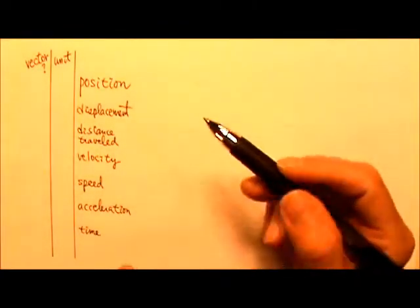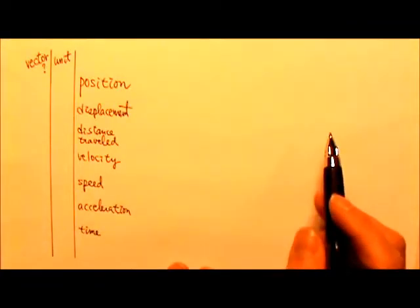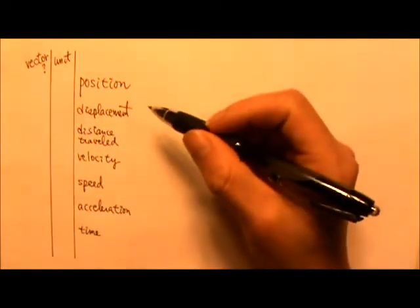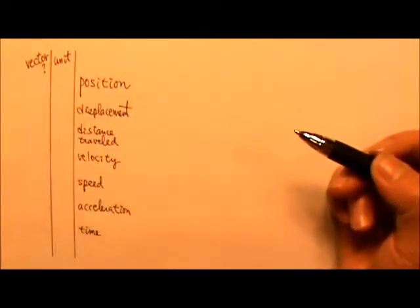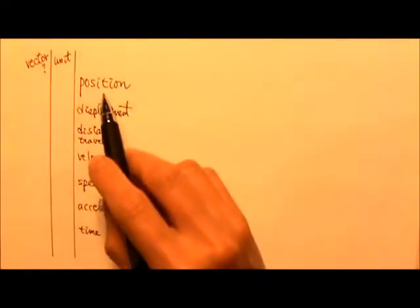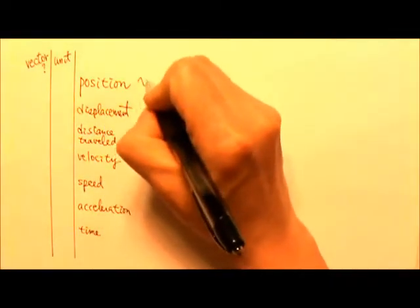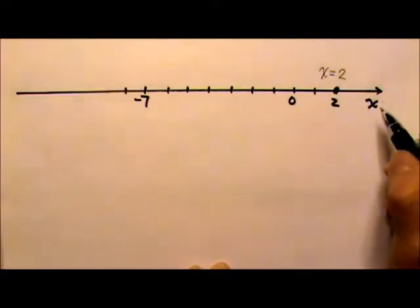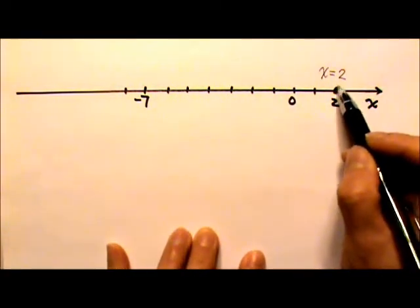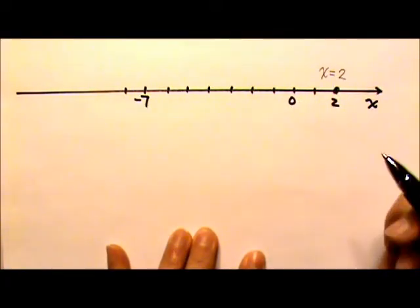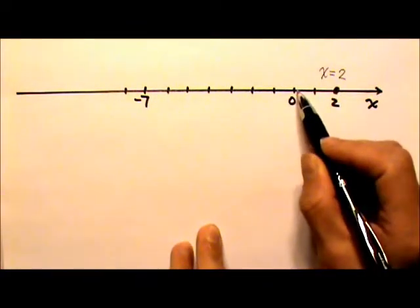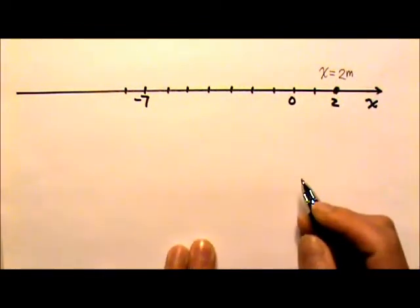For the motion part, we are going to start with one-dimensional motion, which means an object moves along a straight line and does not move out of that line. For one-dimensional motion, to describe the position of an object, we can conveniently use an x-axis — so we use x-coordinates to describe the position. Here I have an x-axis and an object is at x equals 2, meaning it is 2 units away from the origin. The standard unit for position would be meters, because it's a distance.